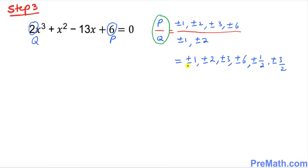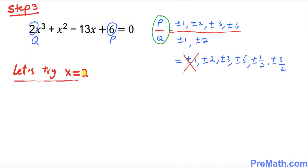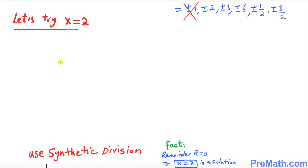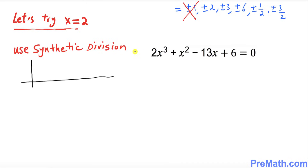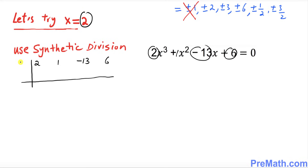We already found that x = 1 and x = -1 are not solutions, so now let's try x = 2. To check whether x = 2 is a solution to our cubic equation, we'll use synthetic division. The coefficients of the equation are 2, 1, -13, and 6, with x = 2 on the outside.